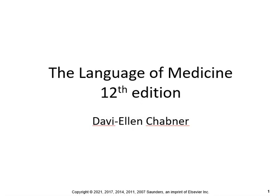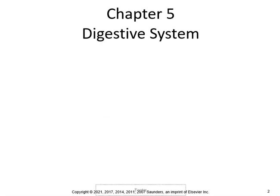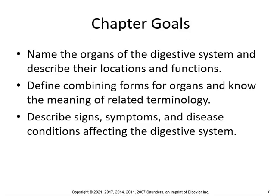Alrighty class, we're going to start with chapter 5 of the digestive system. The chapter goals are: name the organs of the digestive system and describe their locations and functions; define combining words for organs and know the meaning of the related terminology; and describe the signs and symptoms and disease conditions affecting the digestive system.